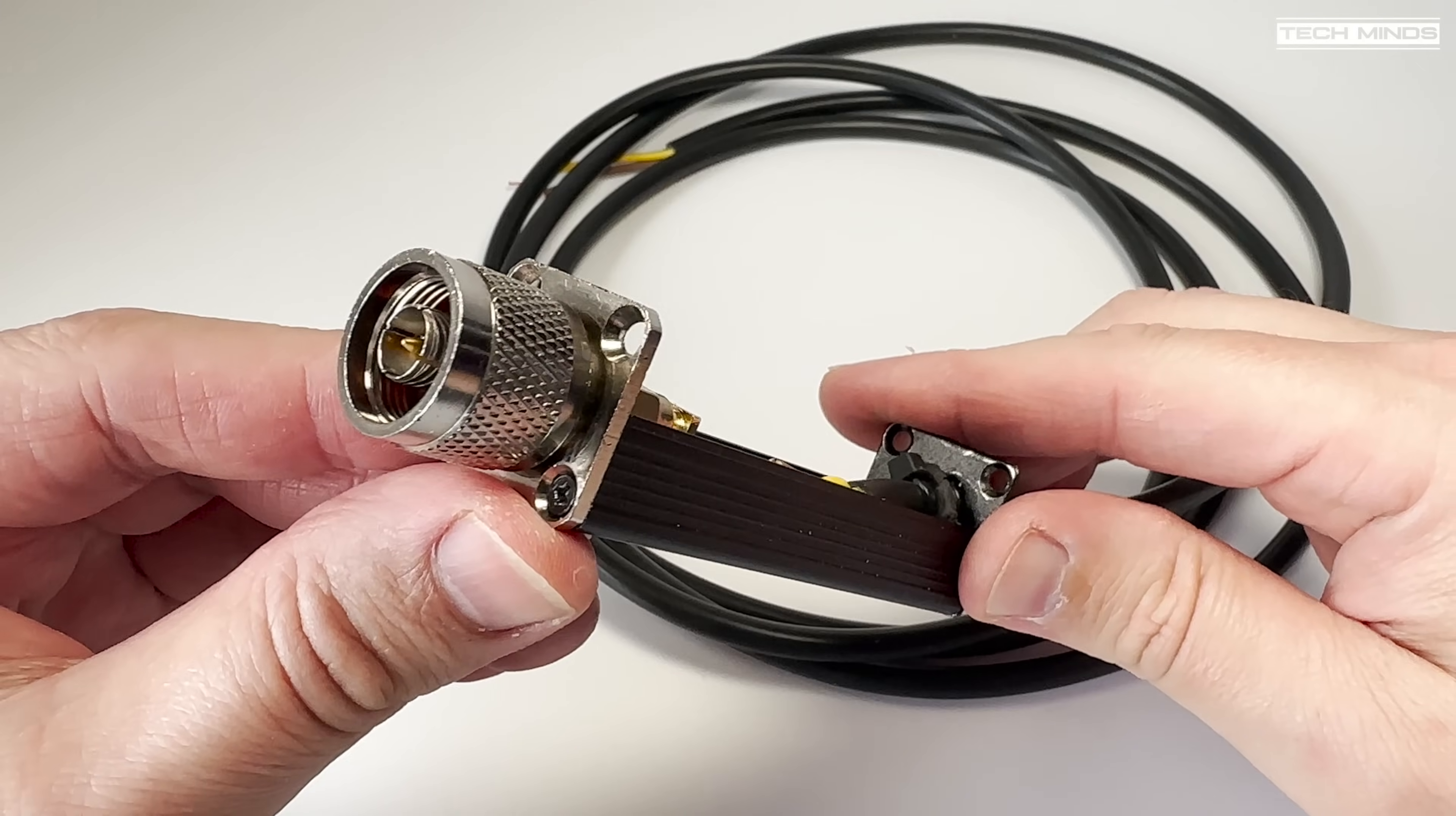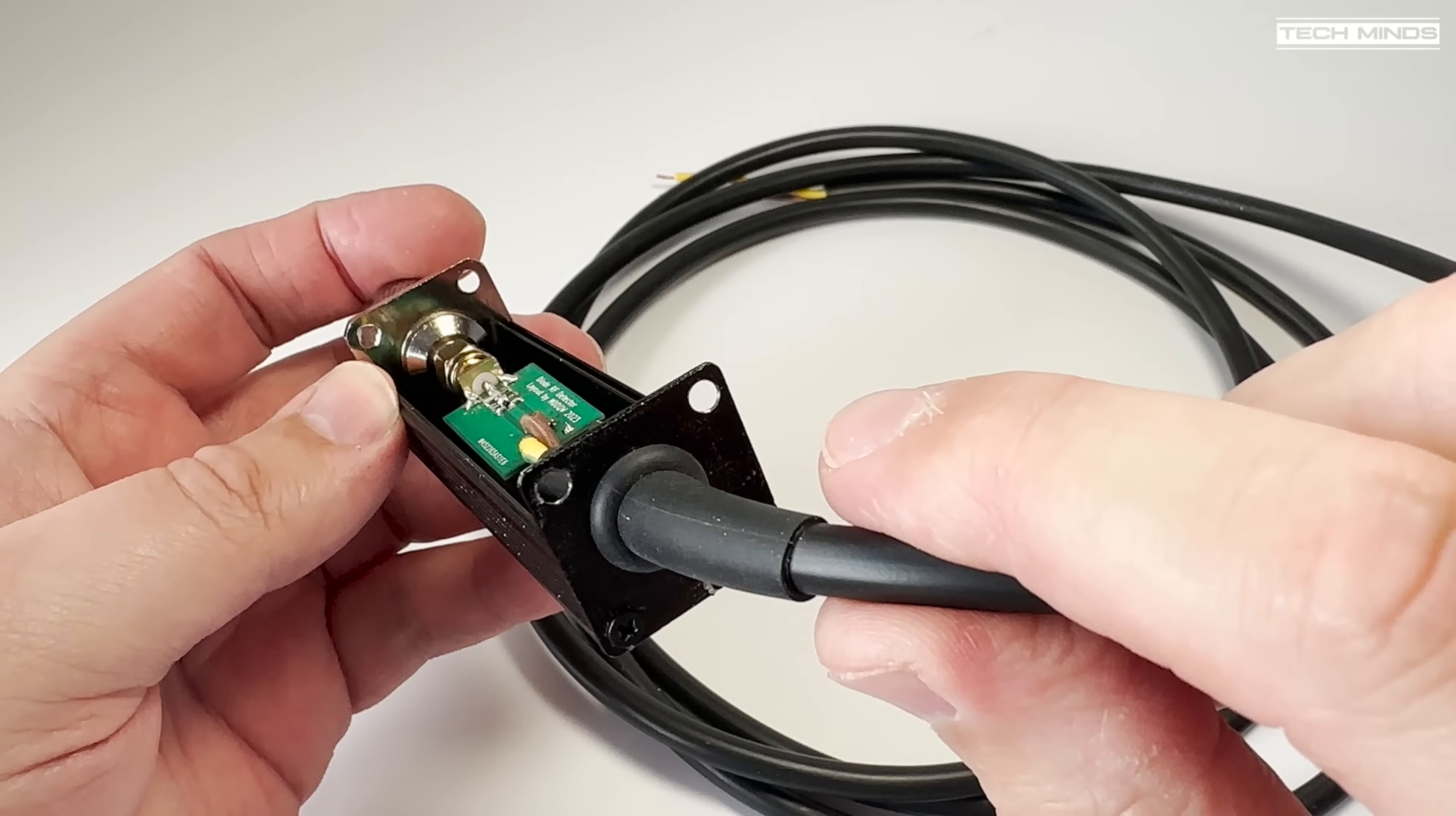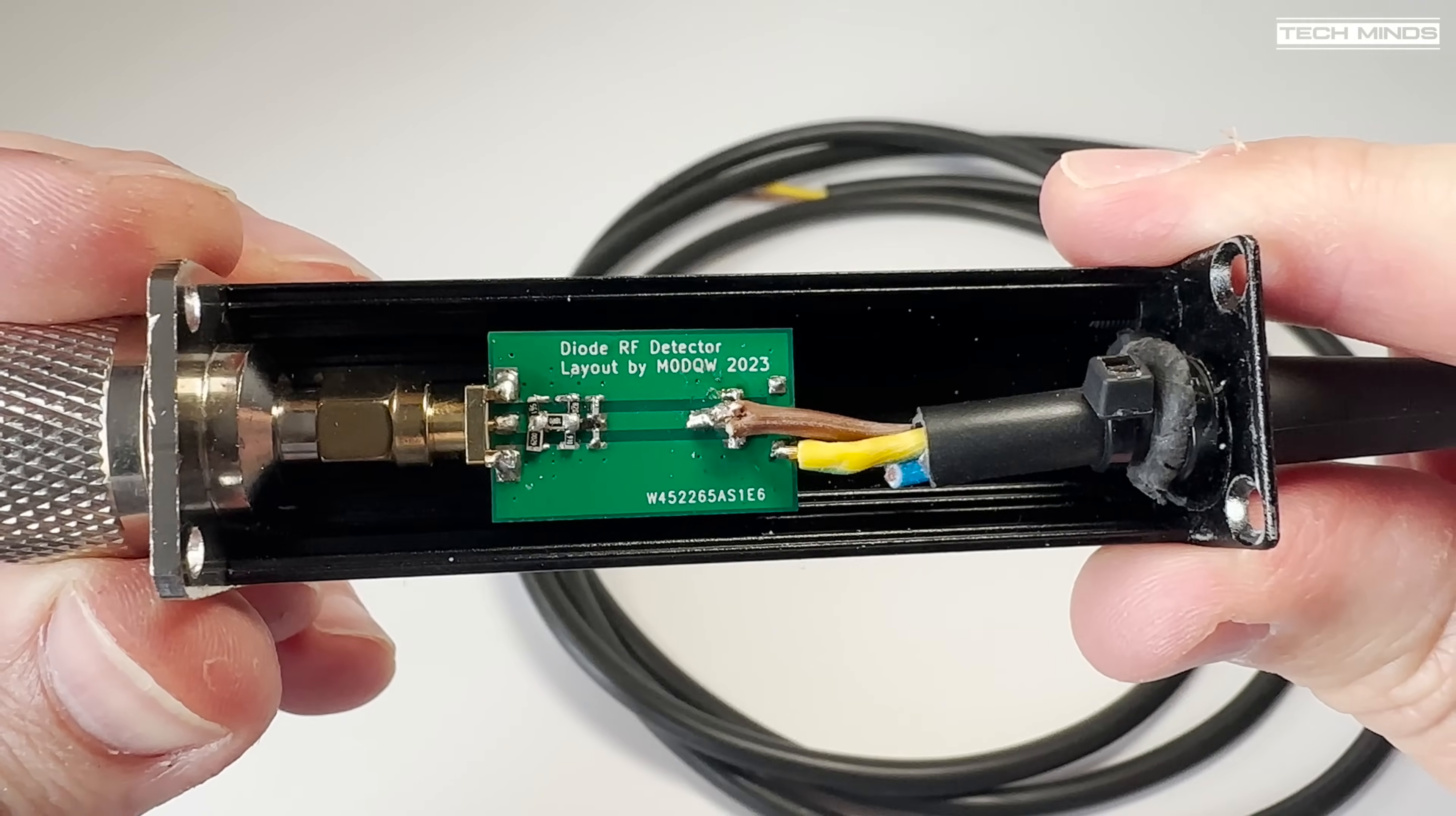The seller also included a male N-type connector along with a grommet for the cable coming out the back. This was a perfect solution for using this like a real professional RF sensor head. I also attached a couple of extra tie wraps on the inside of the casing just to add extra strain relief on that cable, as I really don't want any damage to the board if that cable gets pulled.